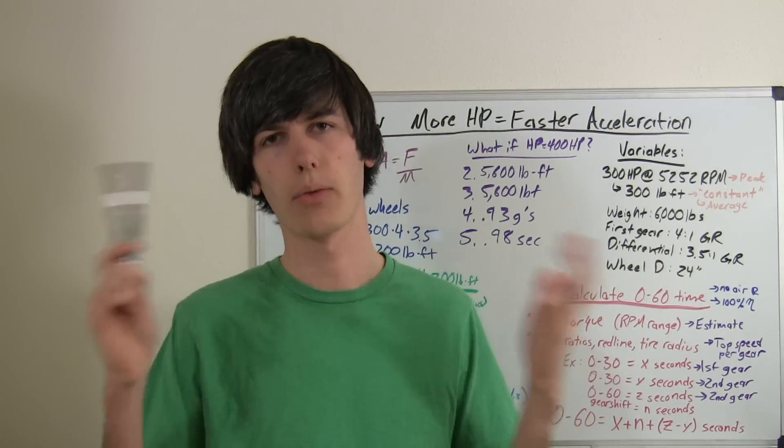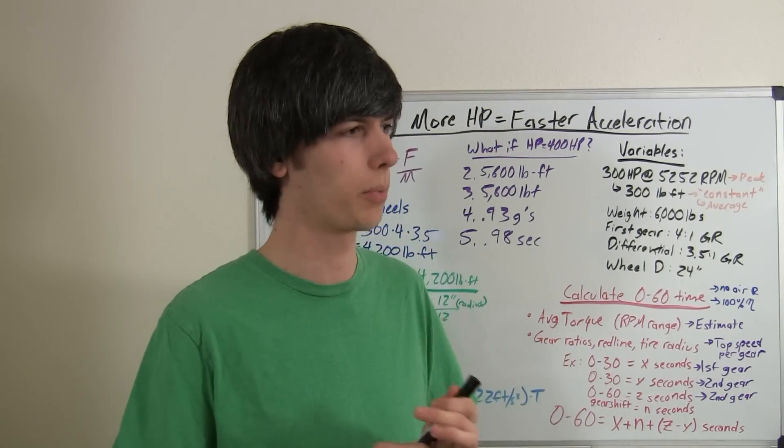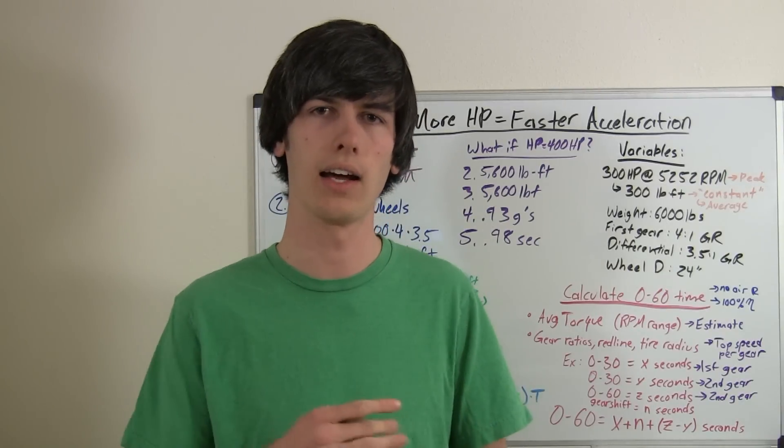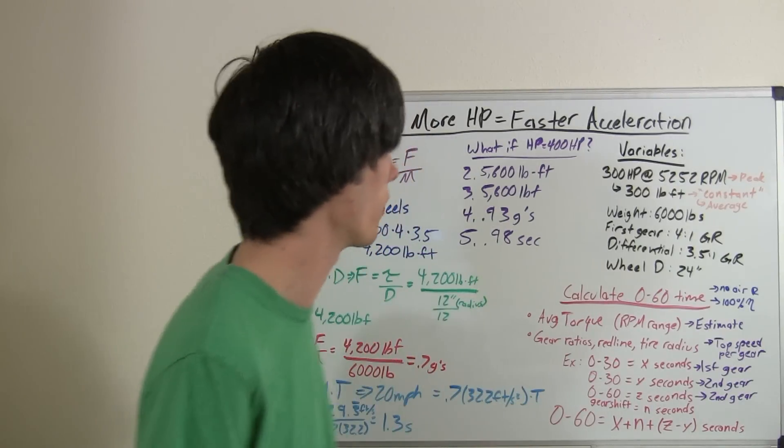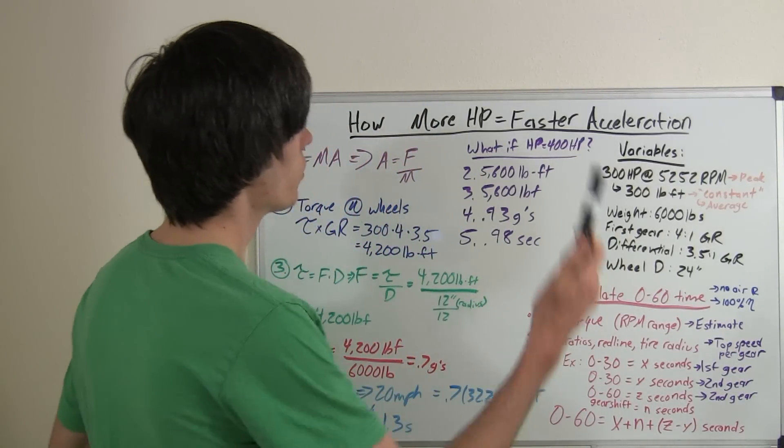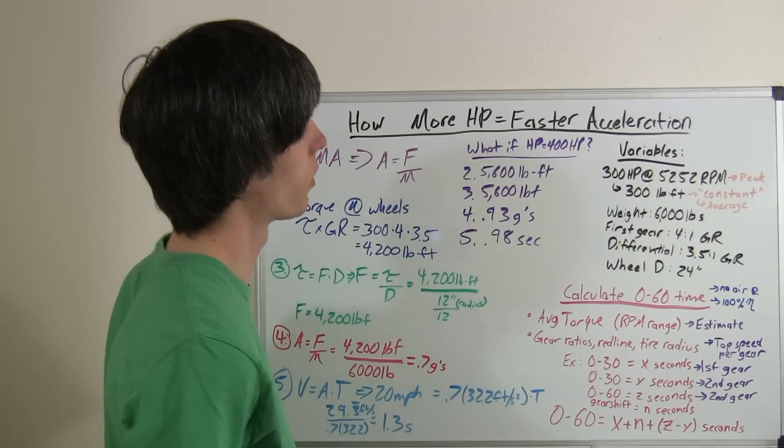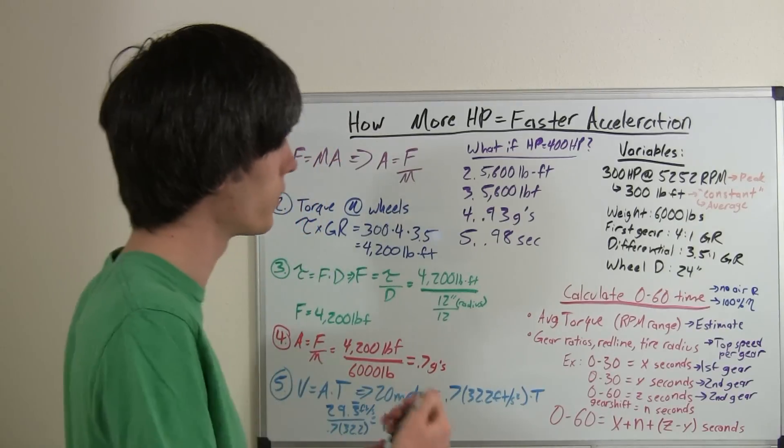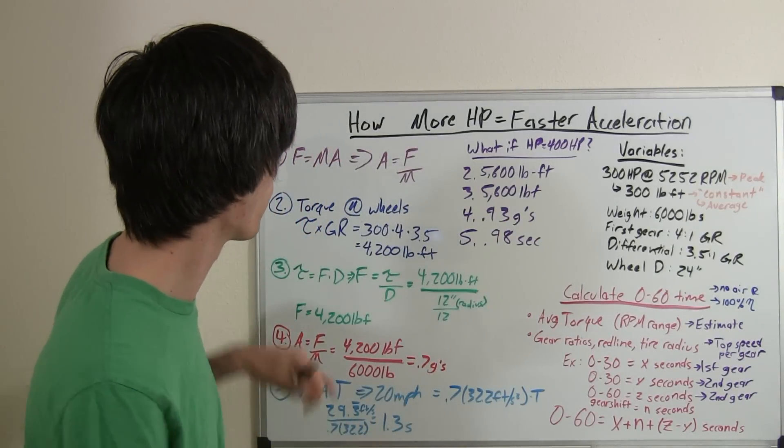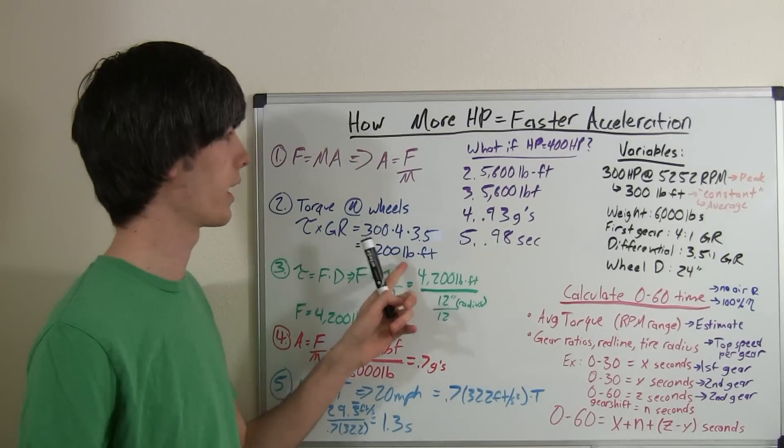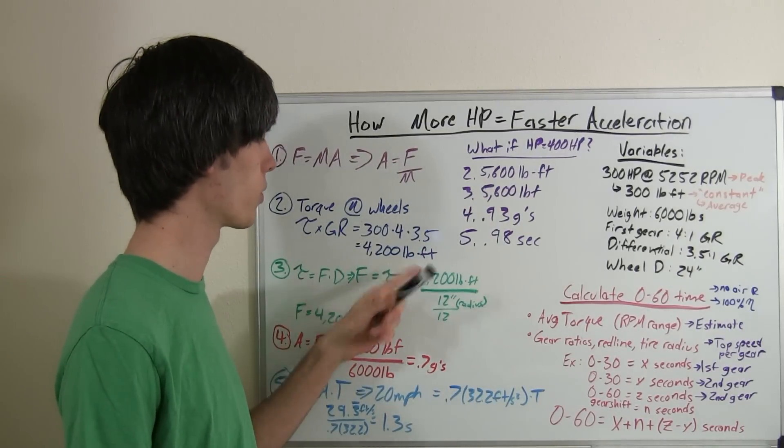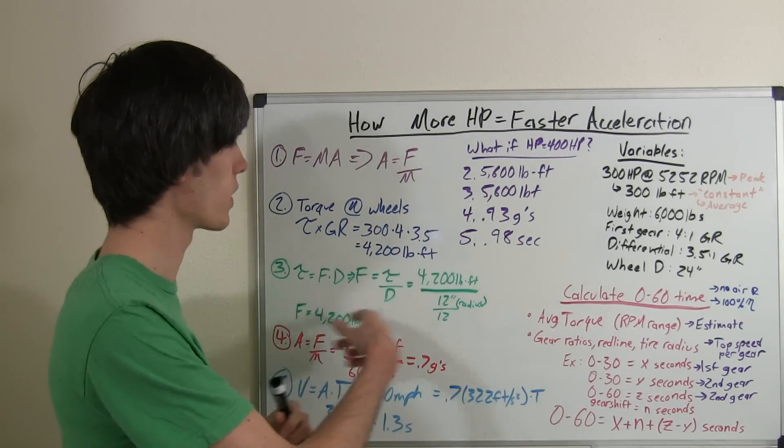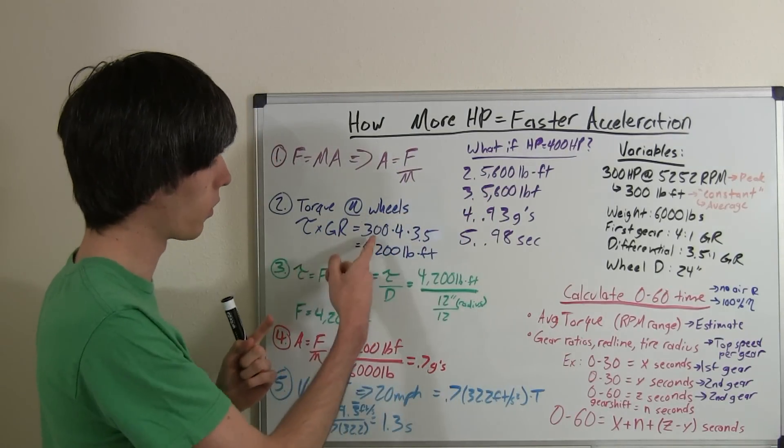Now, that's if our car had 300 horsepower, peak of 300 horsepower, and a constant 300 pound-feet of torque as a result of that. So, if we change our peak horsepower to 400 horsepower, and we say that torque is also equivalent throughout the entire RPM range, that gives us 400 pound-feet of torque. And, if we do step two, we're going to get 5,600 pound-feet of torque. I didn't write out all the equations, but, basically, you're just plugging in 400 there.